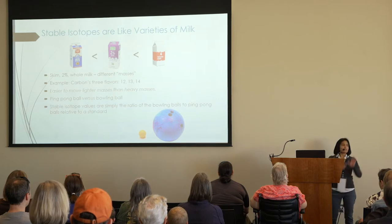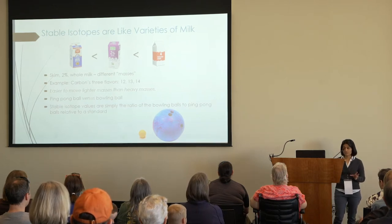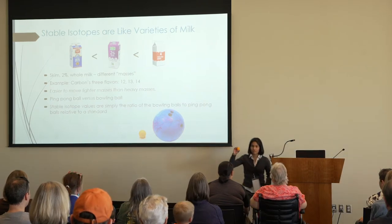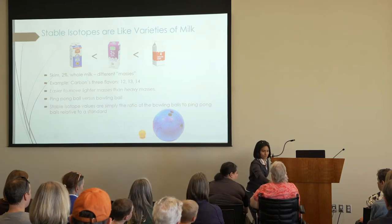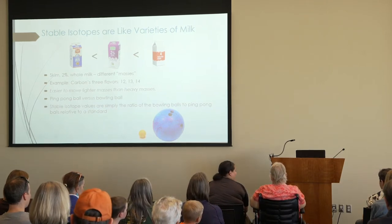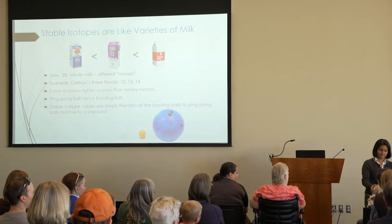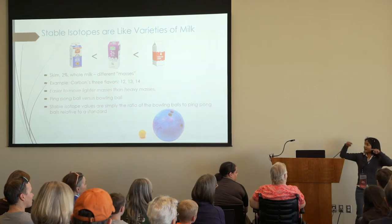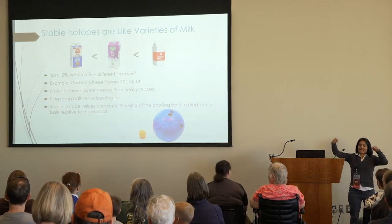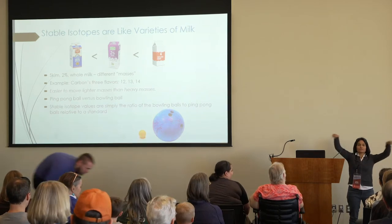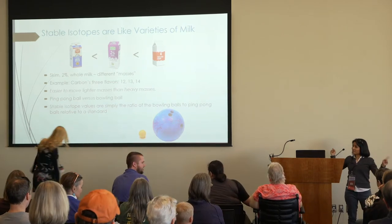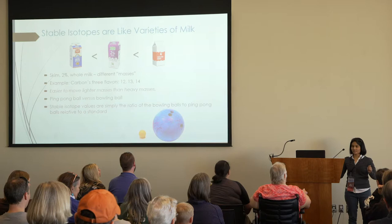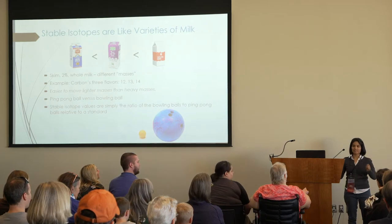To illustrate how mass differences cause fractionation, we're going to have a little race. We start off with a ping pong ball — our light isotope — and a bowling ball — our heavy isotope. We'll pass them down through the audience and snake to the back. In theory, it should be a little bit harder to move the heavier isotope than the lighter one.